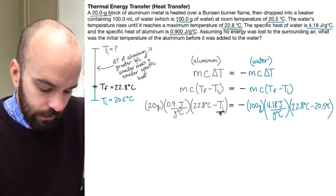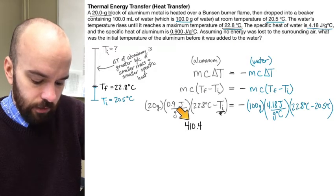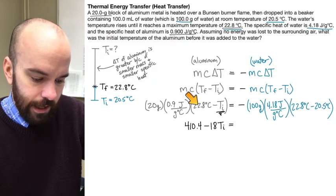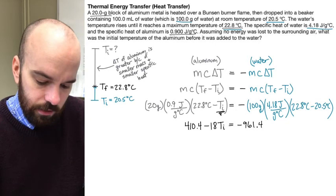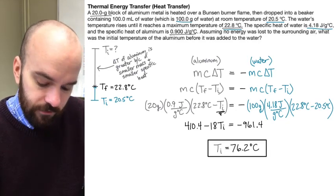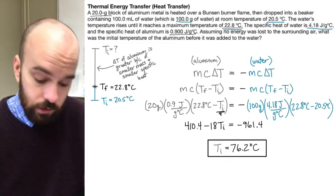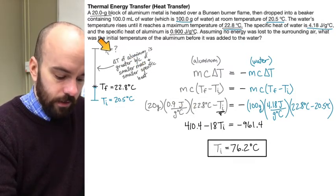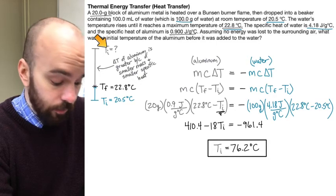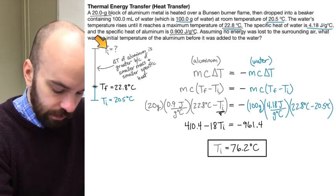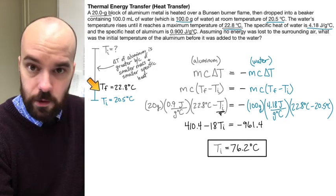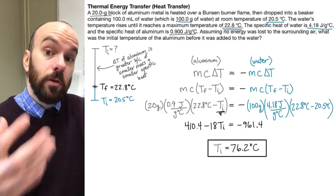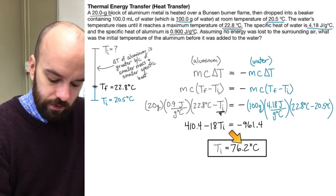So we're solving for T_initial. Multiplying 20 times 0.9 times 22.8 gives 410.4, and 20 times 0.9 gives 18, so we get 410.4 minus 18·T_initial equals negative 961.4. Solving for T_initial gives us 76.2 degrees Celsius for the initial temperature of the aluminum. Looking back, I said the temperature change of aluminum would be much greater than the water's — and we can see that's true: aluminum starts at 76.2 and drops to 22.8, changing by about 50 degrees, whereas the water changed by only a little more than a degree.